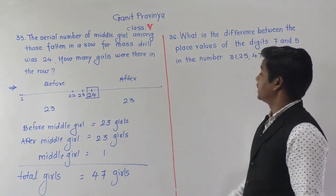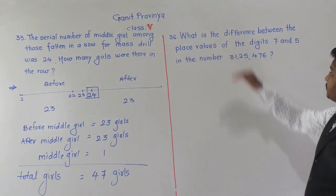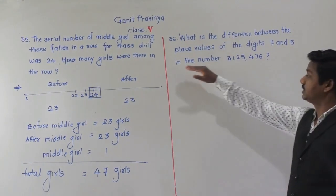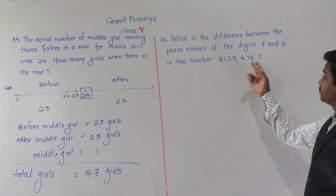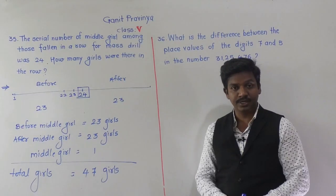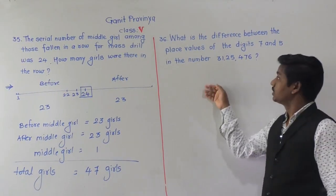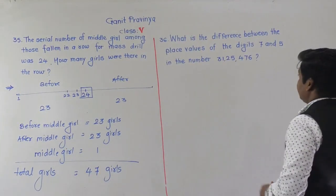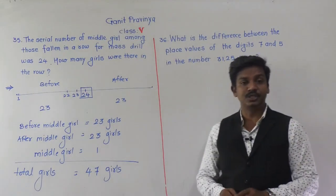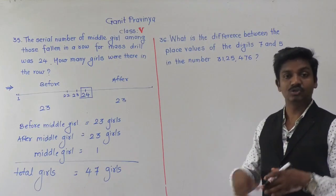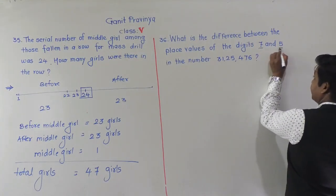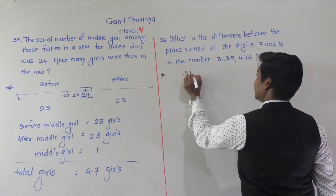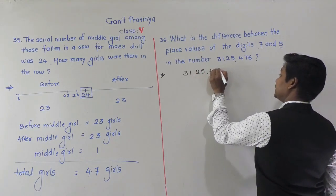Let's move to the next question. What is the difference between the place values of the digits 7 and 5 in the number 31,25,476? We have to find the difference between their place values. In this number, 5 is at the thousands place, so the place value of 5 is 5,000.